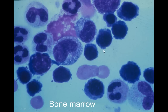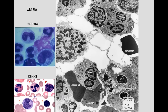Looking at bone marrow again, instead of looking for spherical nuclei, look for cells with oval nuclei — those are the ones that will become granulocytes. You can see an immature one here, a more mature one there, and progressively more mature forms, finally producing mature neutrophils.